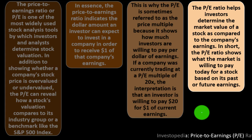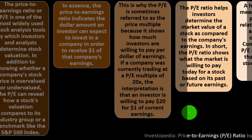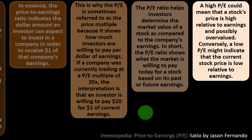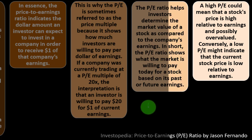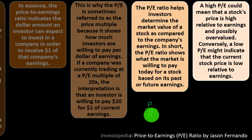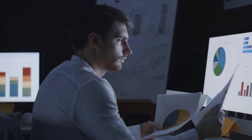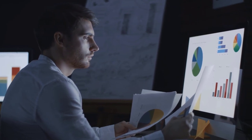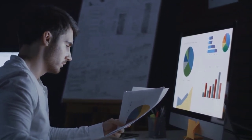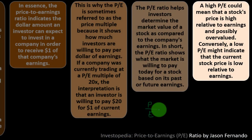The P/E shows what the market is willing to pay today for a stock based on its past or future earnings. A high P/E could mean a stock's price is high relative to earnings and possibly overvalued — the price is many multiples of earnings. A lower P/E might mean better valuation, all else being equal, because it's closer to the earnings. You need to compare this P/E to other stocks within the sector and to other indexes to determine if the price is properly valued.